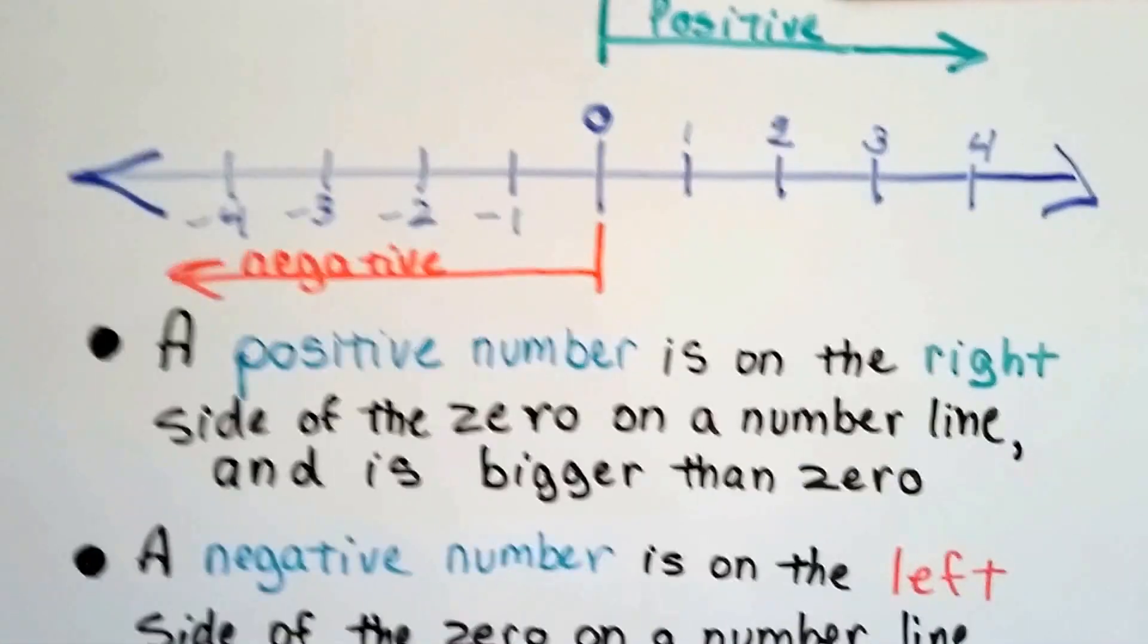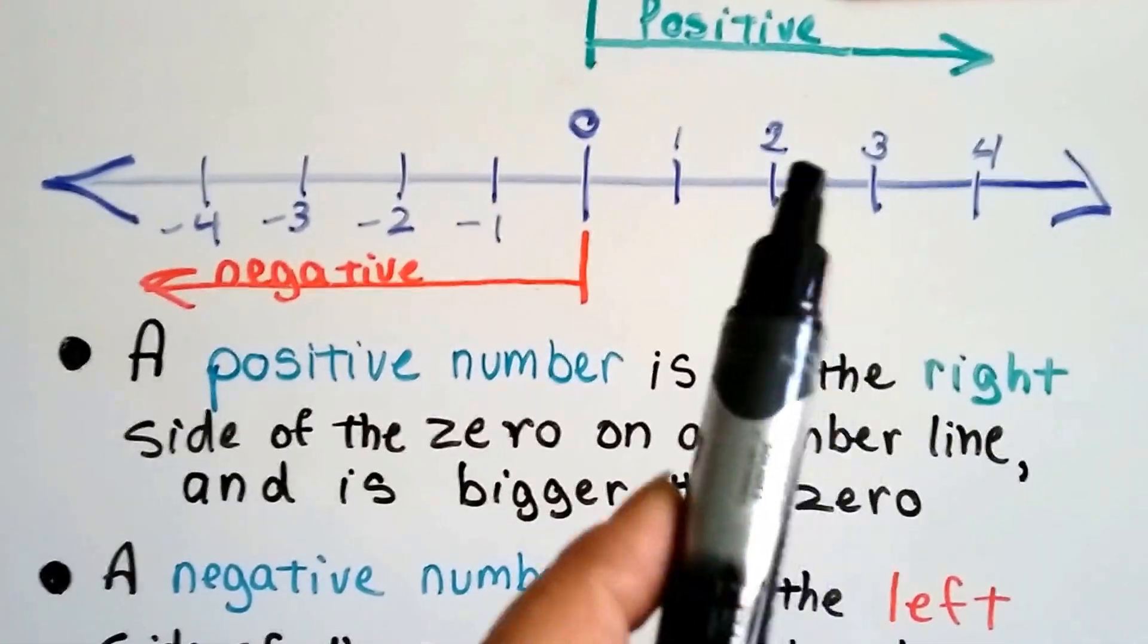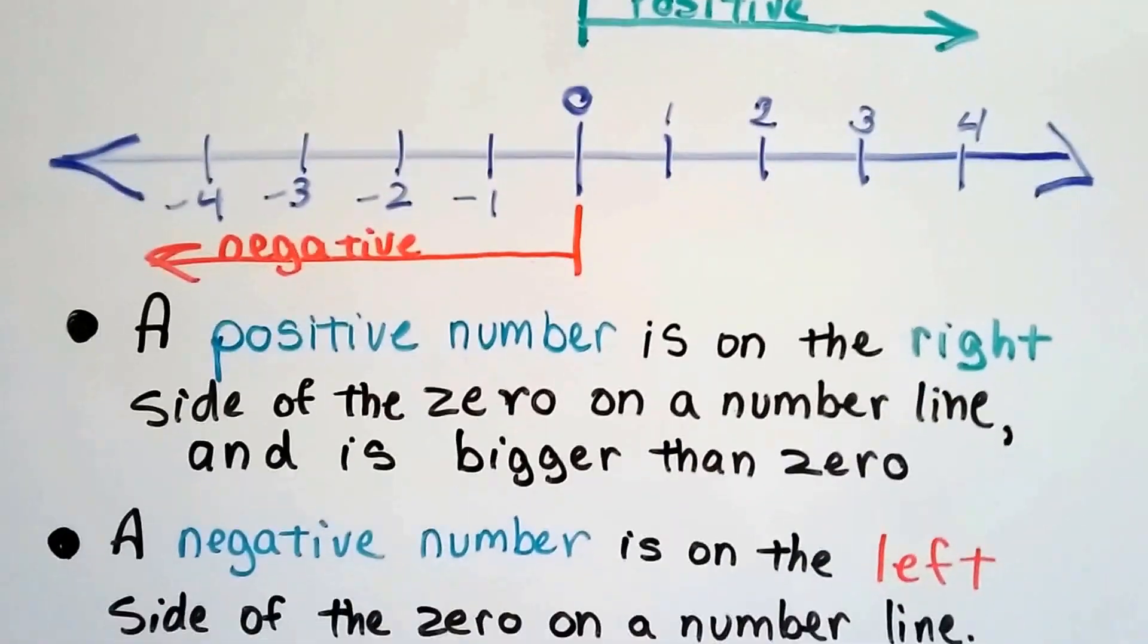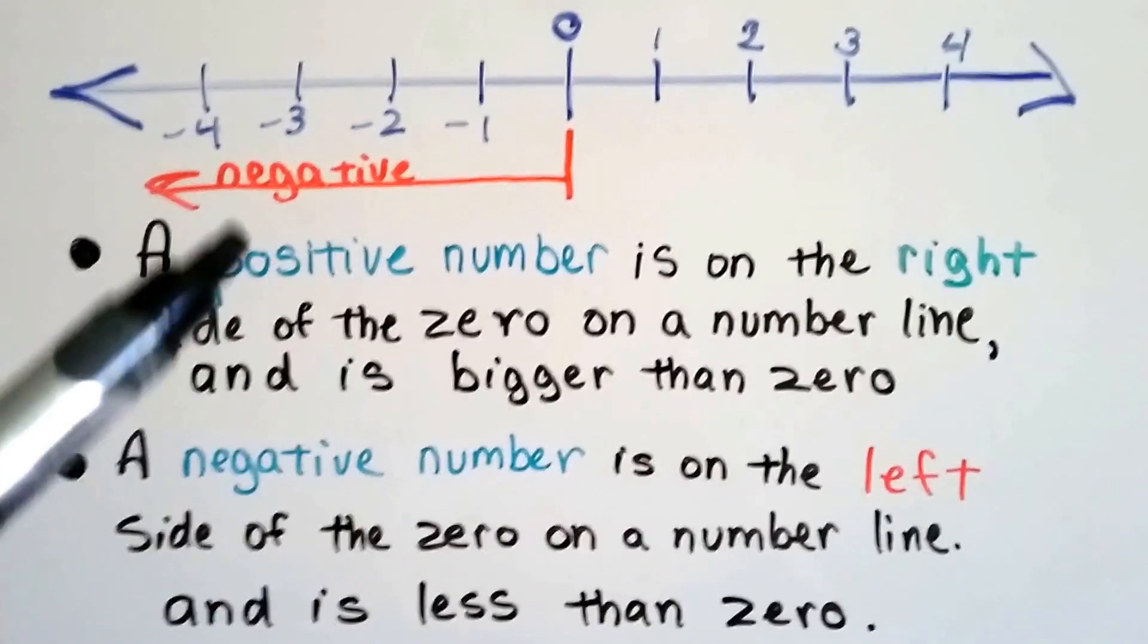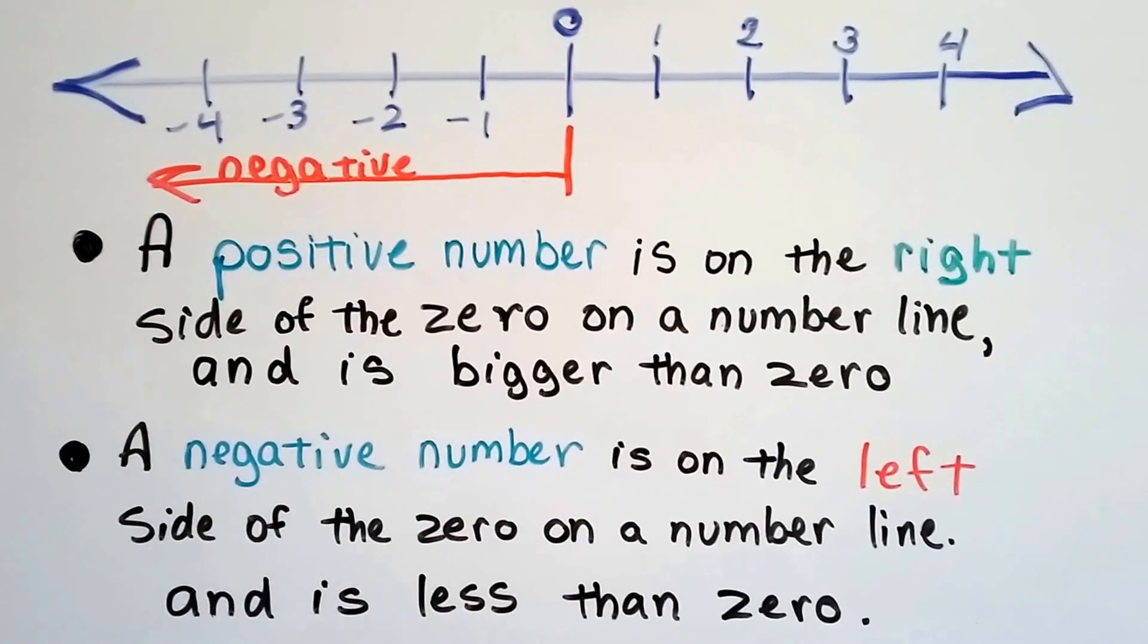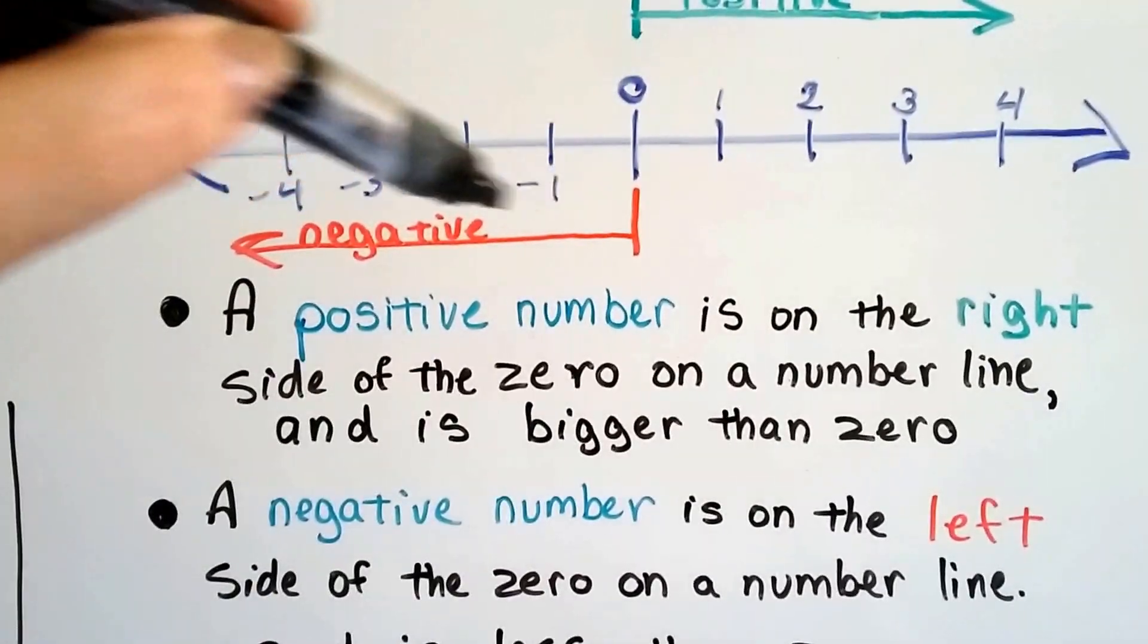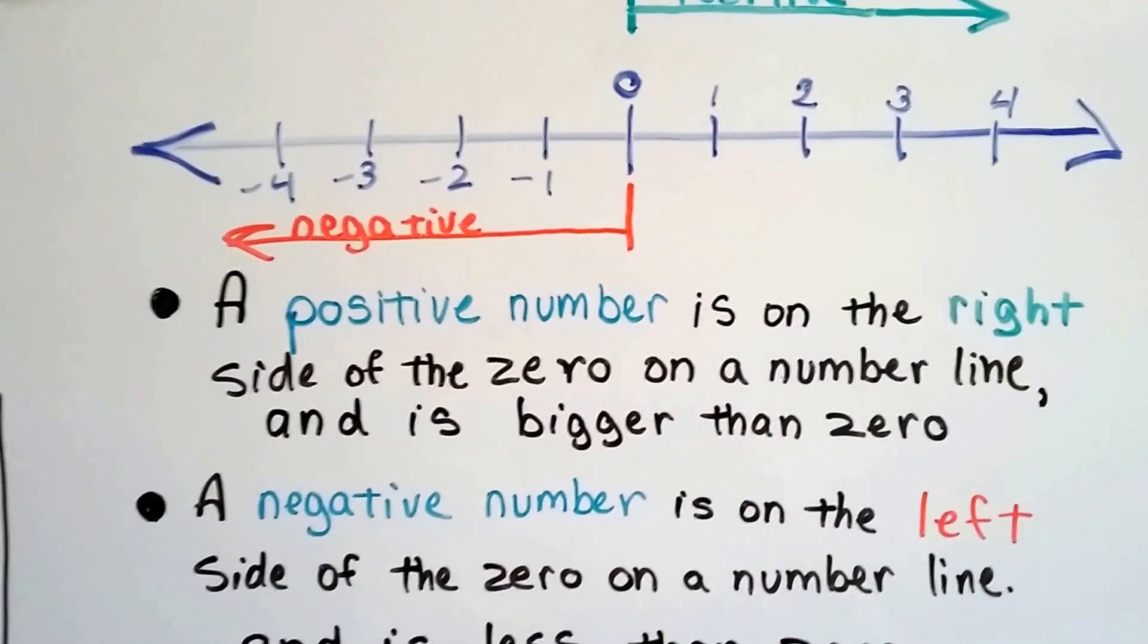A positive number is on the right side of zero on a number line, this side, and it's bigger than zero. A negative number is on the left side of the zero on the number line and is less than zero. It goes to the left, and positive goes to the right.